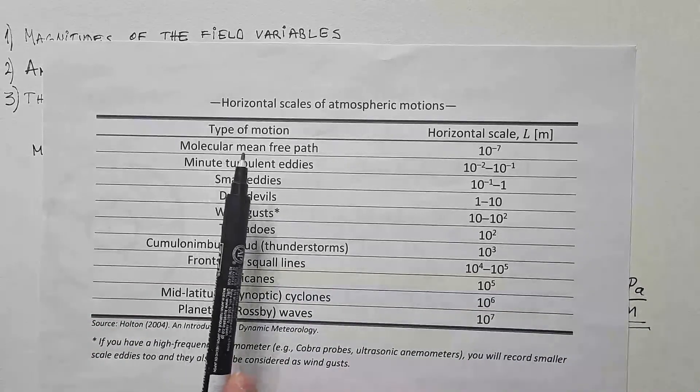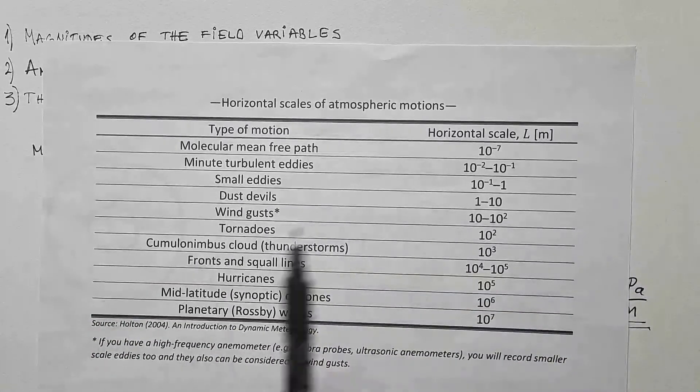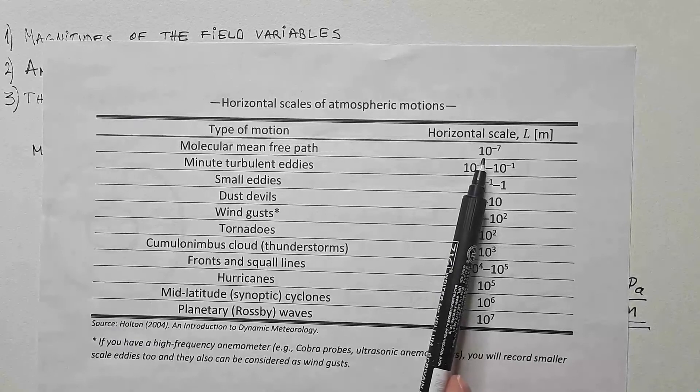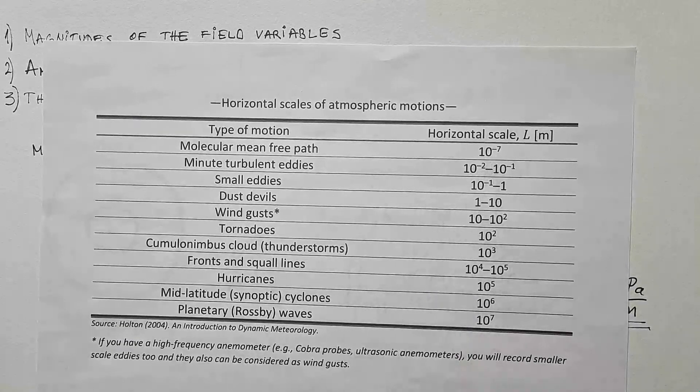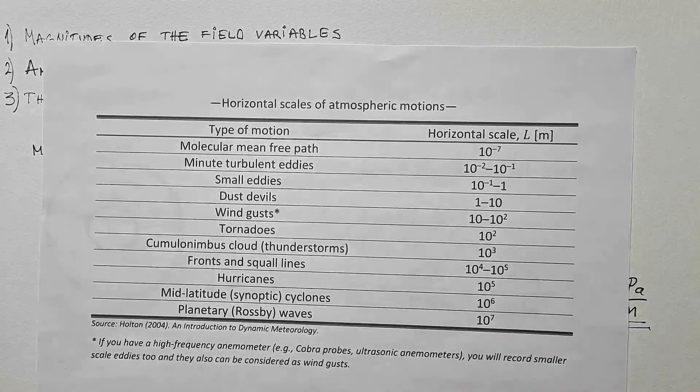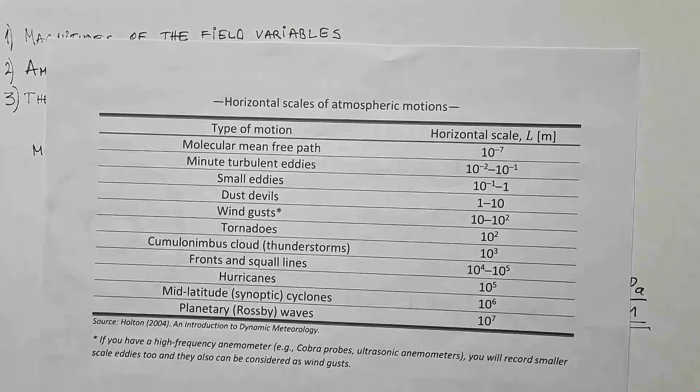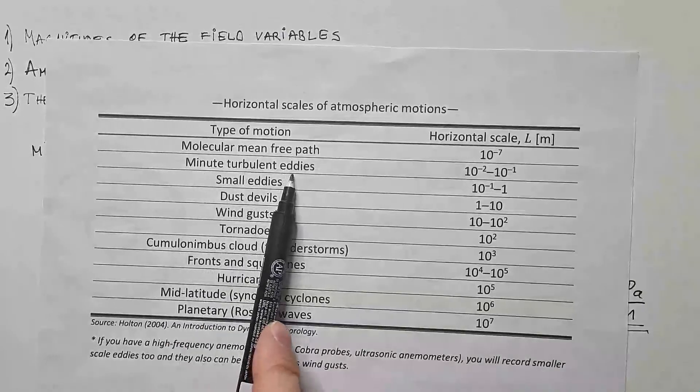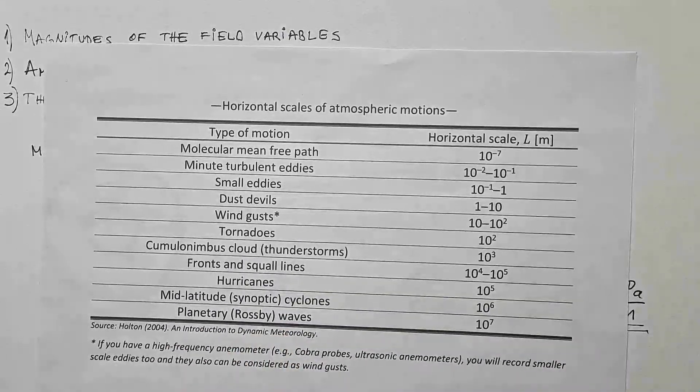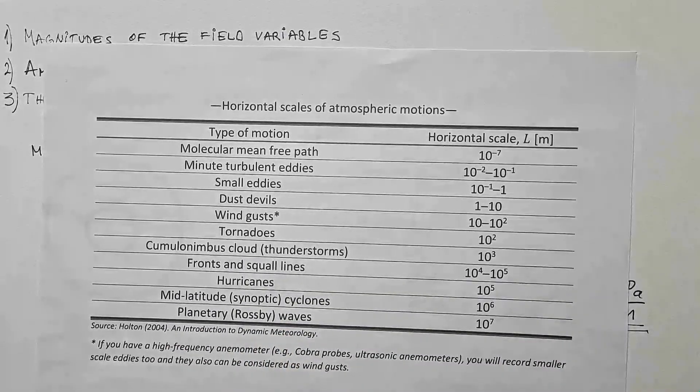we see that molecular mean free path has general characteristic horizontal scale of 10 to the power of minus 7 meters. What is molecular mean free path? It's the mean path that molecules have before colliding with another molecule. Then we have minute turbulent eddies. These are the small turbulent eddies, and these are their characteristic scales.